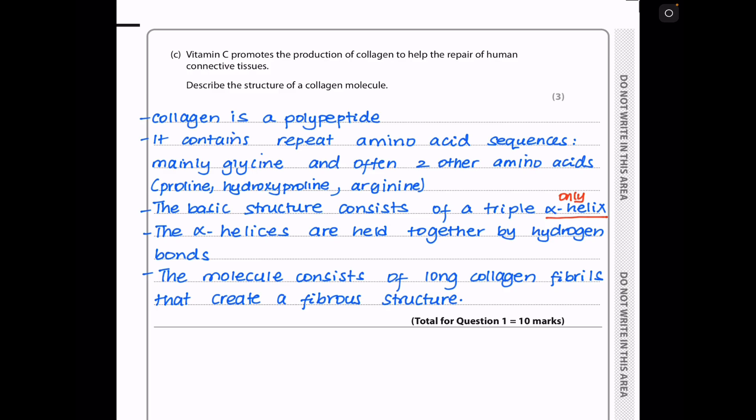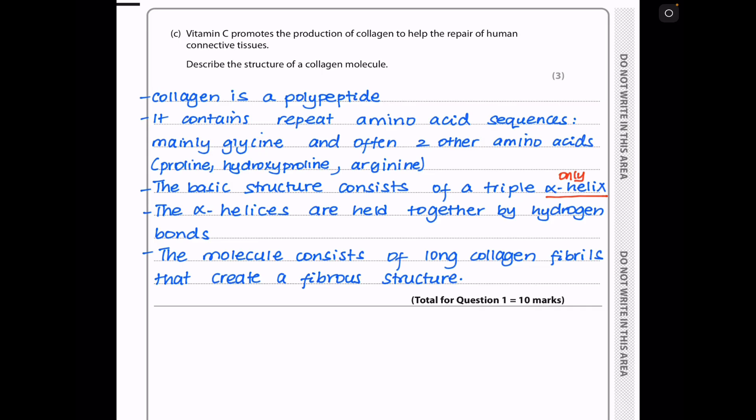In part C, vitamin C promotes the production of collagen to help the repair of human connective tissues. I want you to describe the structure of a collagen molecule. Here, we are talking about a whole molecule. Collagen is a protein, so it's a polypeptide. And this polypeptide is made up of repeating sequences of amino acids, which are mainly glycine, and often two other amino acids, which could be proline, hydroxyproline, as well as arginine. The basic structure consists of a triple helix, or you could say triple alpha helix, and these alpha helices are held together by hydrogen bonds. The molecule consists of long collagen fibrils that create the fiber structure. Any three points would award you three marks here. And this brings us to the end of question 1.